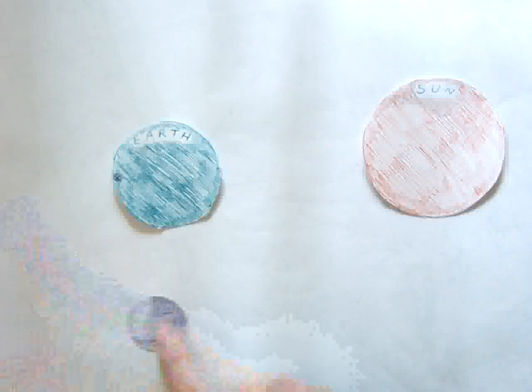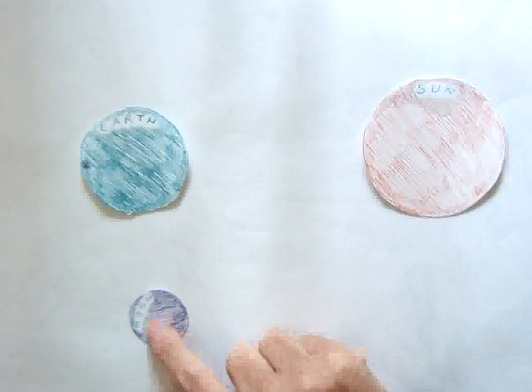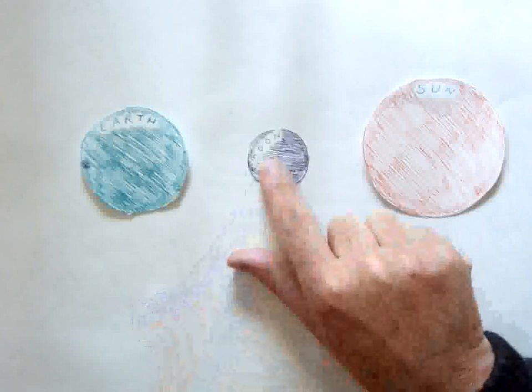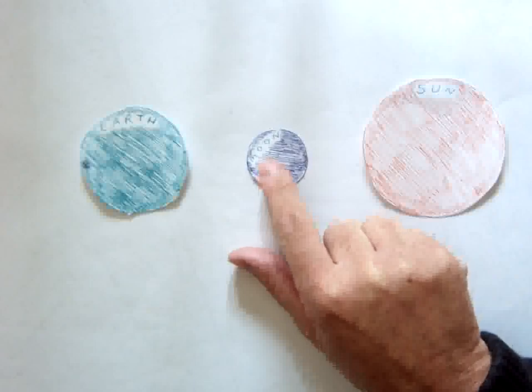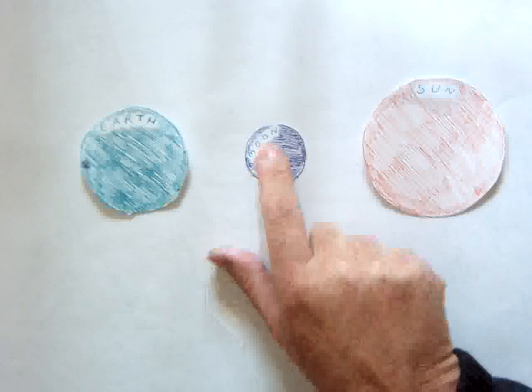Then another 7 days later, the Moon moves around to this position here, which is the last quarter. And then finally, back here to what's a new Moon again. So you've got 7-day tranches: new Moon, first quarter, full Moon, last quarter.